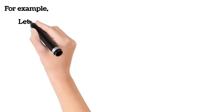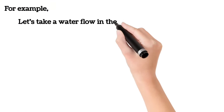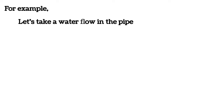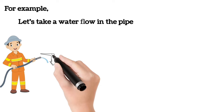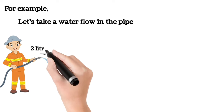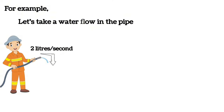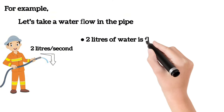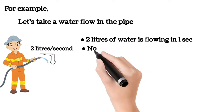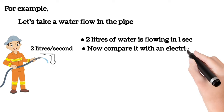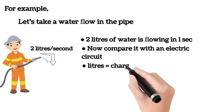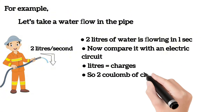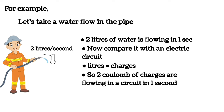Let's use a water flow analogy for better understanding. A man is holding a pipe through which 2 liters of water flows per second. Comparing this with an electric circuit: liters correspond to coulombs of charge. So 2 coulombs of charge are flowing in a circuit in one second — that is, I = 2 coulombs / 1 second = 2 amperes.